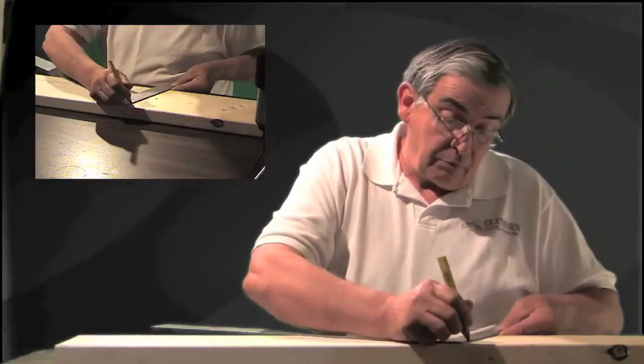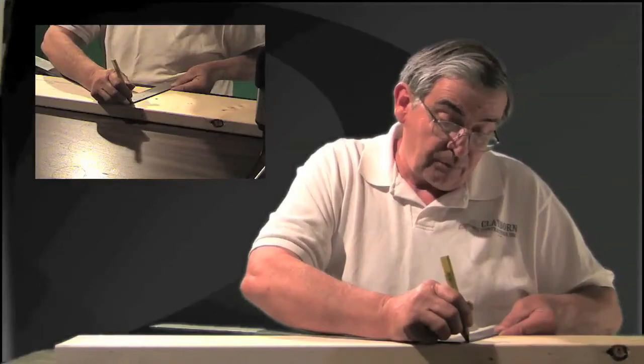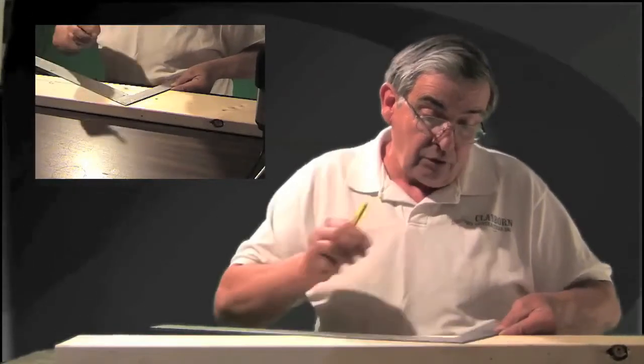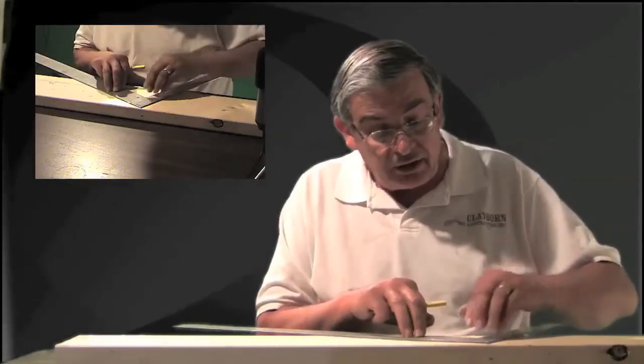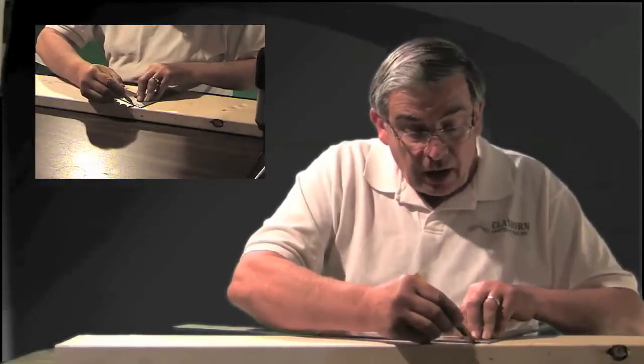We know that we need to knock off three quarters to a half inch from the length of it. We're going to slide our framing square back again. We're going to bob our tail of our rafter off.